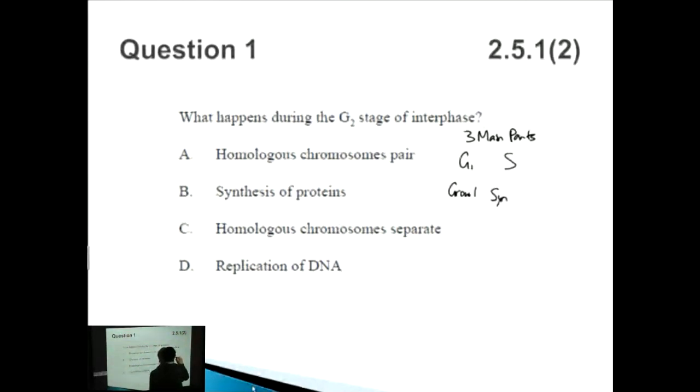So those are the three main parts of interphase. Let's have a look here, what happens during the G2 stage of interphase? Do the homologous chromosomes pair? No, because homologous chromosomes pairing is actually during meiosis, which is completely separate from the other parts.